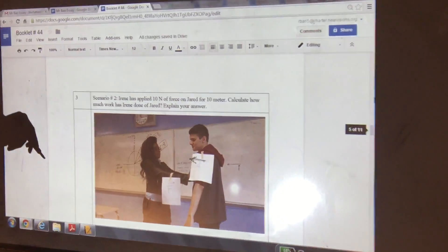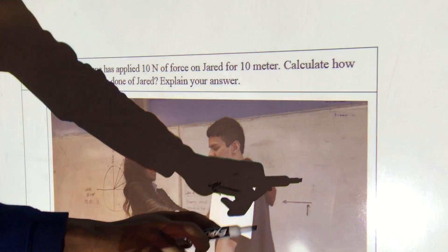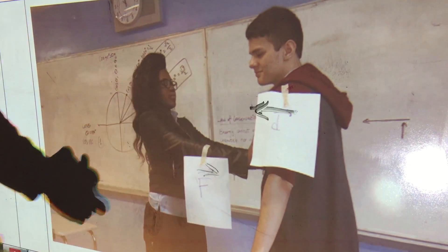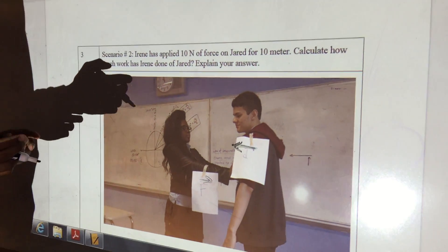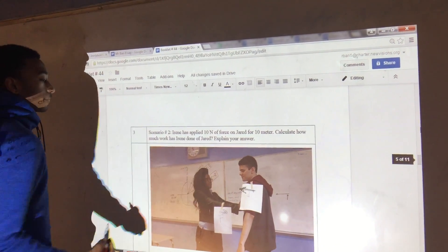Scenario 2: First we have to know the direction that they're both going in. Irene is pushing Jared this way and Jared is going the opposite way, so one is this way and the other one is that way. That would mean cosine is 180 degrees because Jared is pushing back.